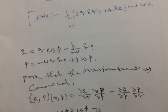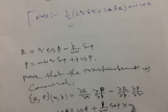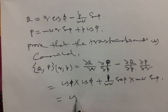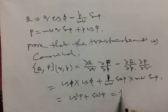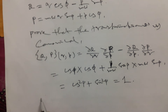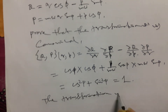Then minus ∂Q/∂p, which will be (1/mω) sin φ, multiplied by ∂P/∂q, which is mω sin φ. So it will be cos²φ plus sin²φ, which equals 1. Since this Poisson bracket equals 1, we can conclude that the transformation is canonical.